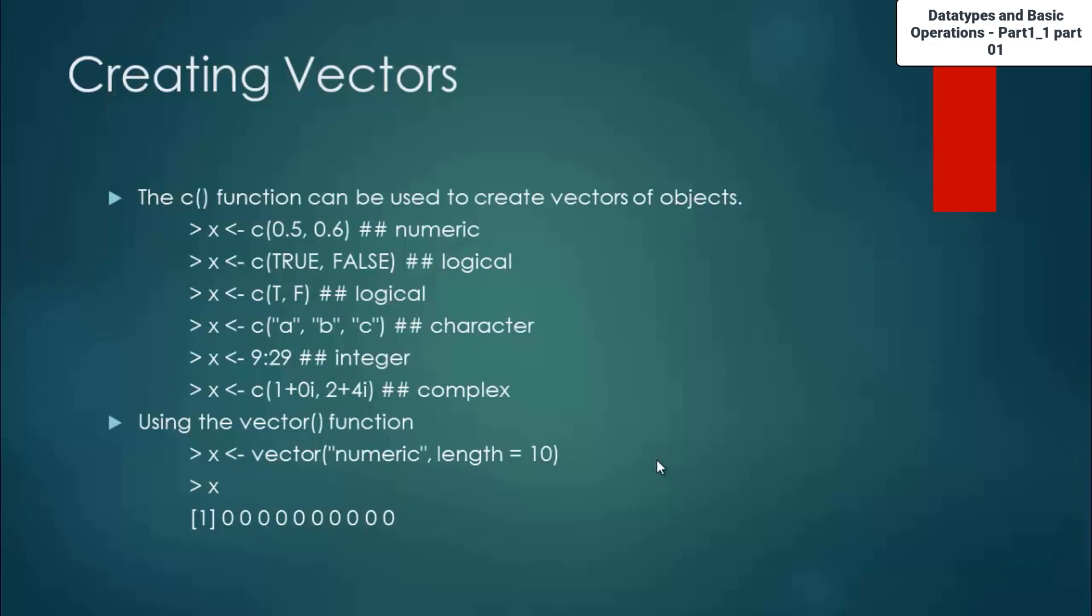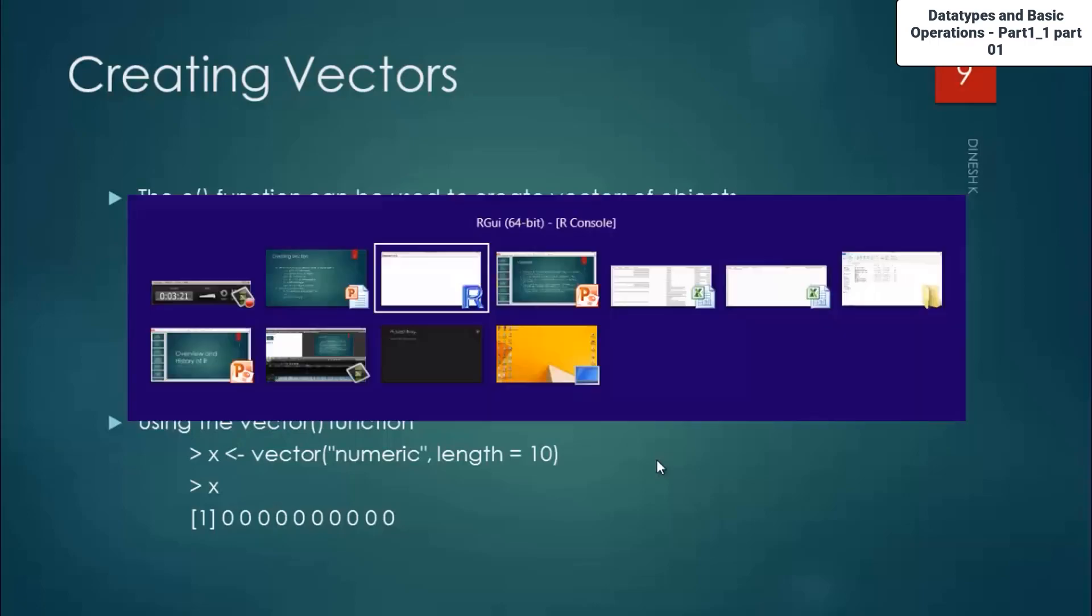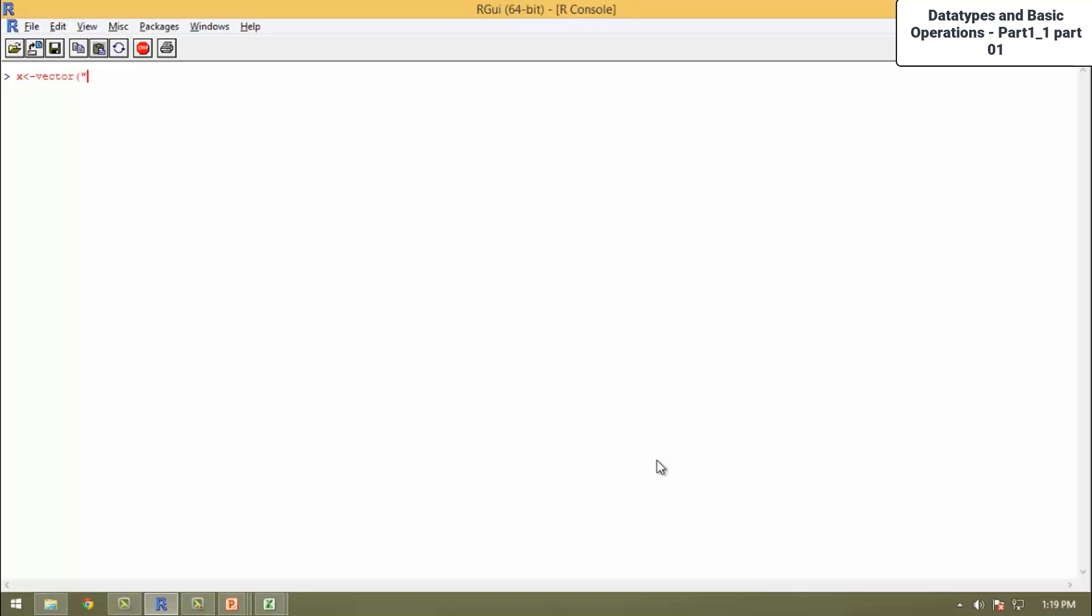Now we will move on to the next thing. Using the vector function, we can create a vector. Earlier I showed you the function c followed by the set brackets. Now the function vector followed by the set brackets. What are the parameters passed in this vector function? The first thing is what type of vector you are trying to create. Either it is numeric or logical or character or complex or integer. And the length which you are defining for the vector. For example, I am using control L to clear the screen. Now when I add a vector using the vector function, I want to create a numeric vector with length equal to 10. Now this vector is created. As this vector is not assigned any values, it will display only zeros. From 1 to 10, all 10 values in the vector are zeros.